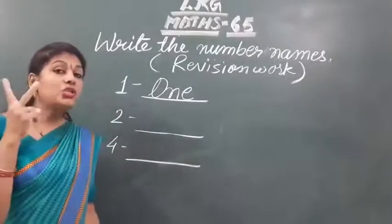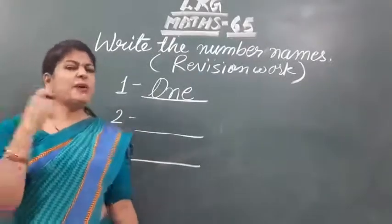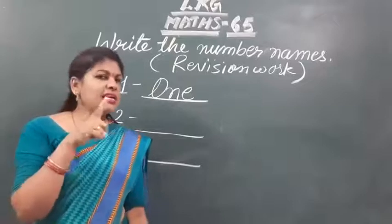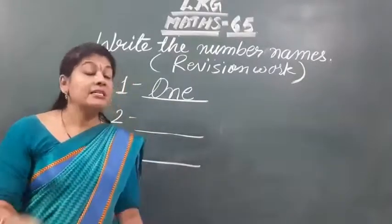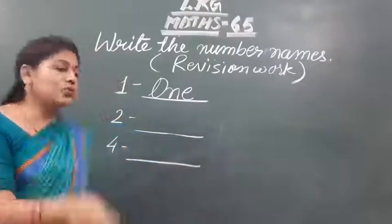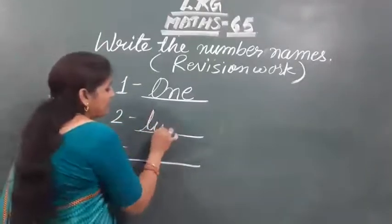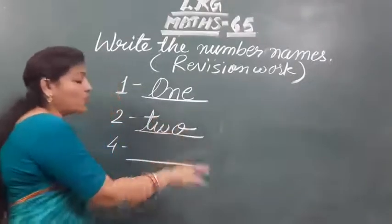Here is given number two. Then what is the spelling of two? T-W-O. Of course. T-W-O two. That is our second number name. T-W-O two.